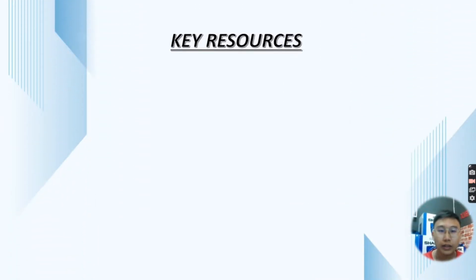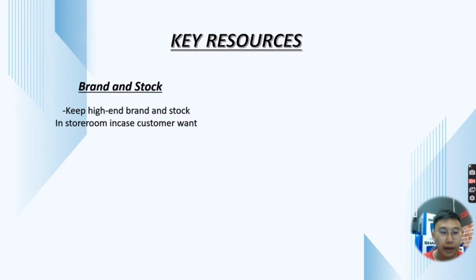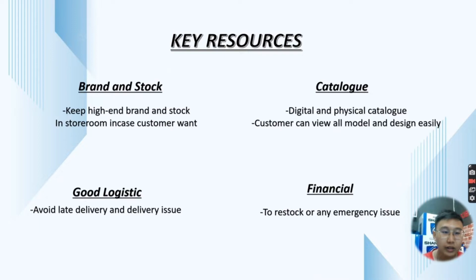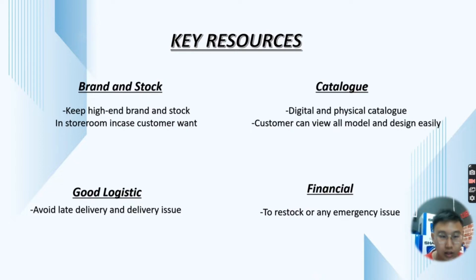Next, it's about Key Resources. We have Brand and Stock, Catalog, Good Logistics, and Financial. Brand and Stock means keeping high-end brand products and stock in our storeroom in case customers want them. We provide two catalogs — Digital and Physical — so customers can view all models and designs easily. Good Logistics helps avoid problems such as late delivery and delivery issues. Financial resources are very important as we need them for restocking or any emergency issues.